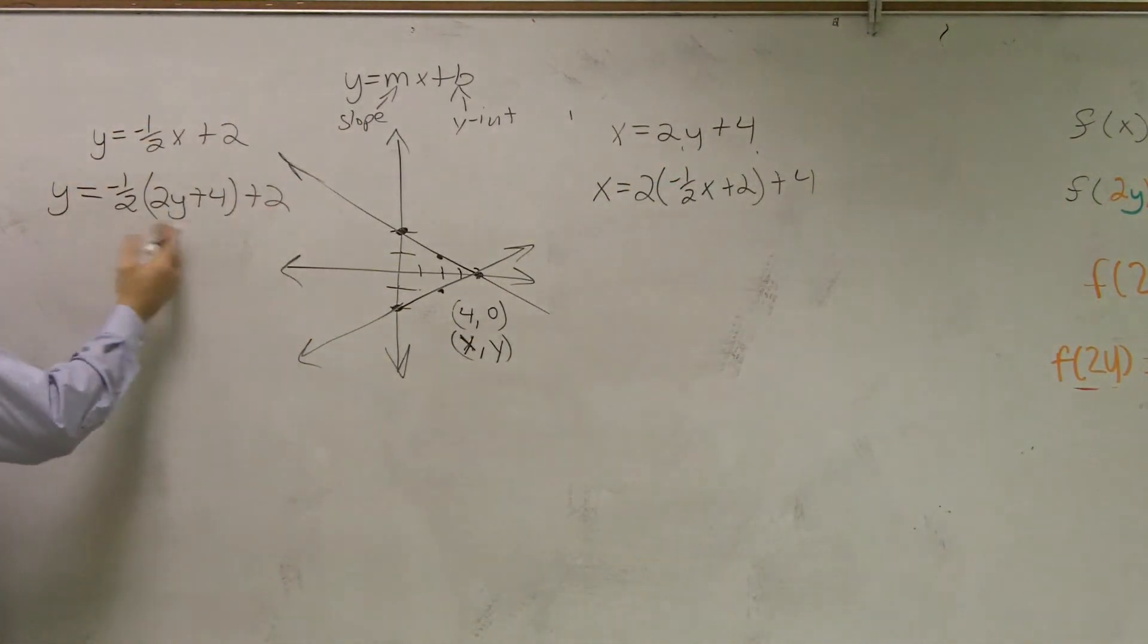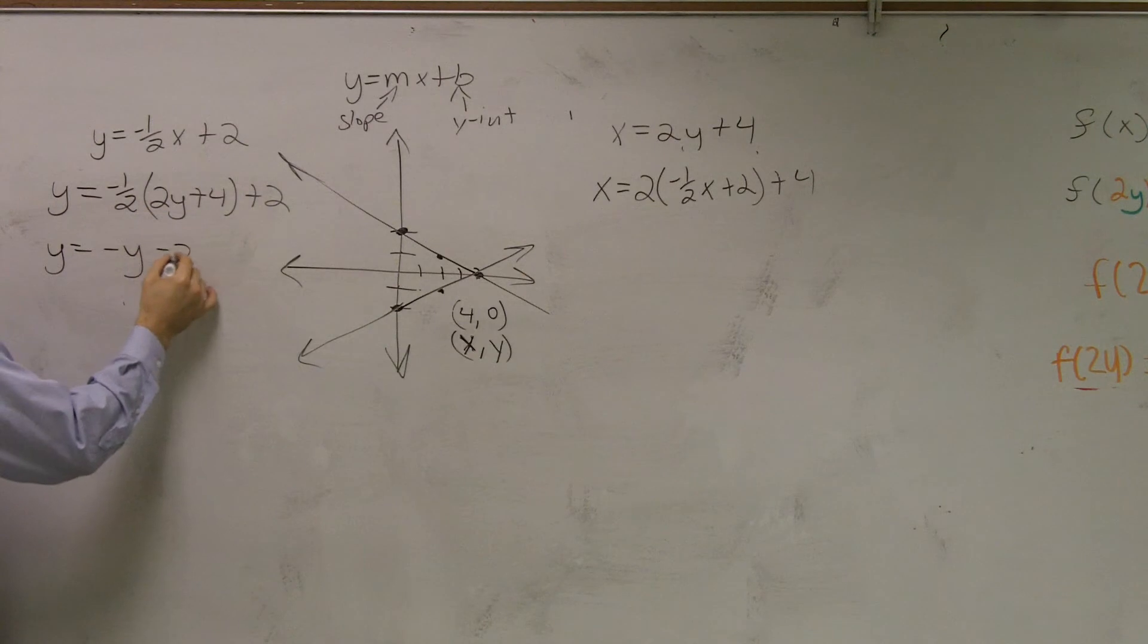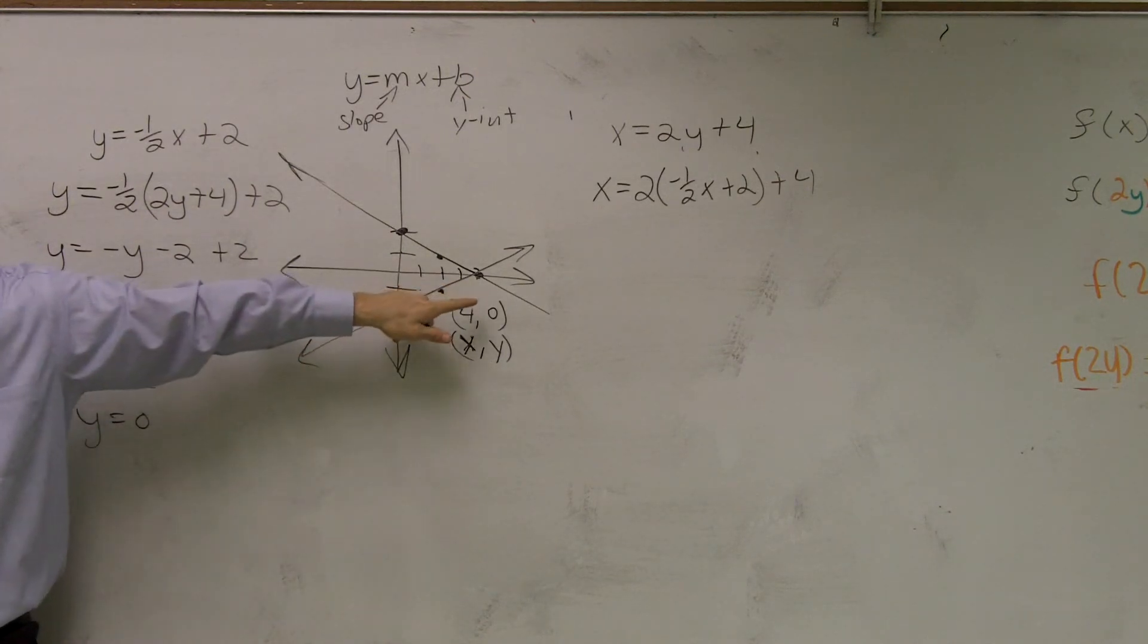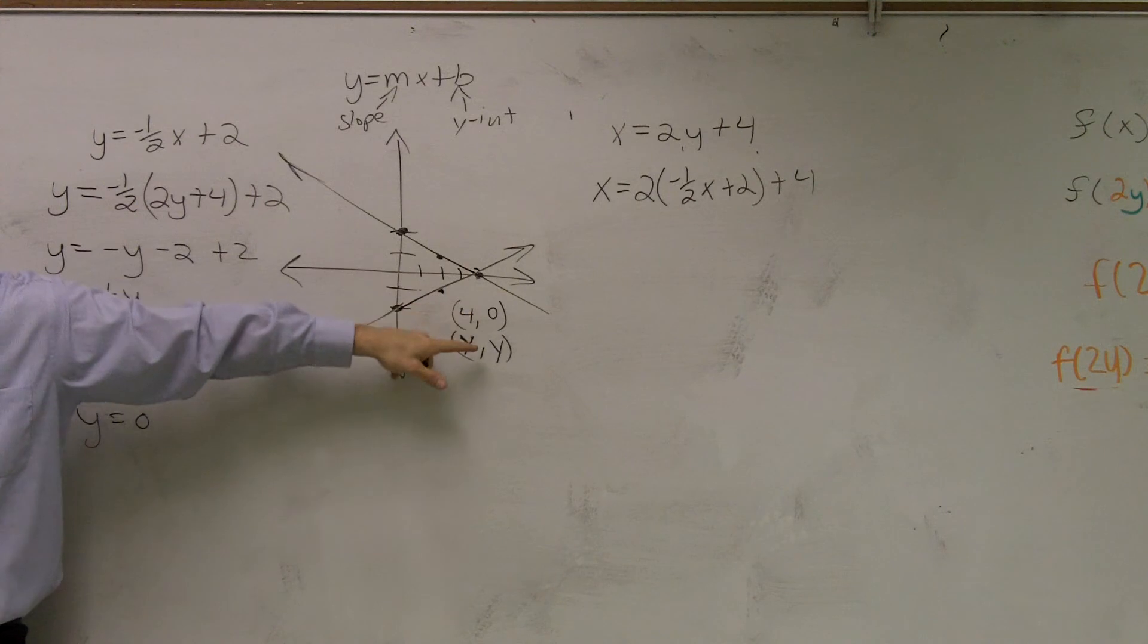So I have y equals negative 1/2 times 2y plus 4. Negative 1/2 times 2 is negative y, and negative 1/2 times 4 is negative 2 plus 2. Get the y on the other side. So I have 2y equals 0. Divide by 2. y equals 0. You guys see y equals 0, right, on a point.